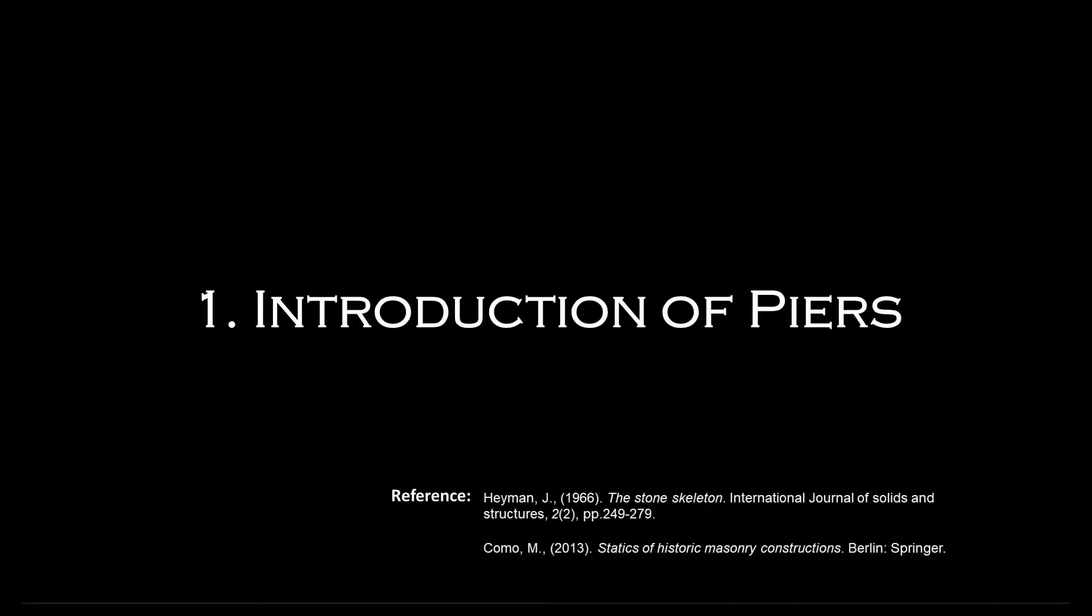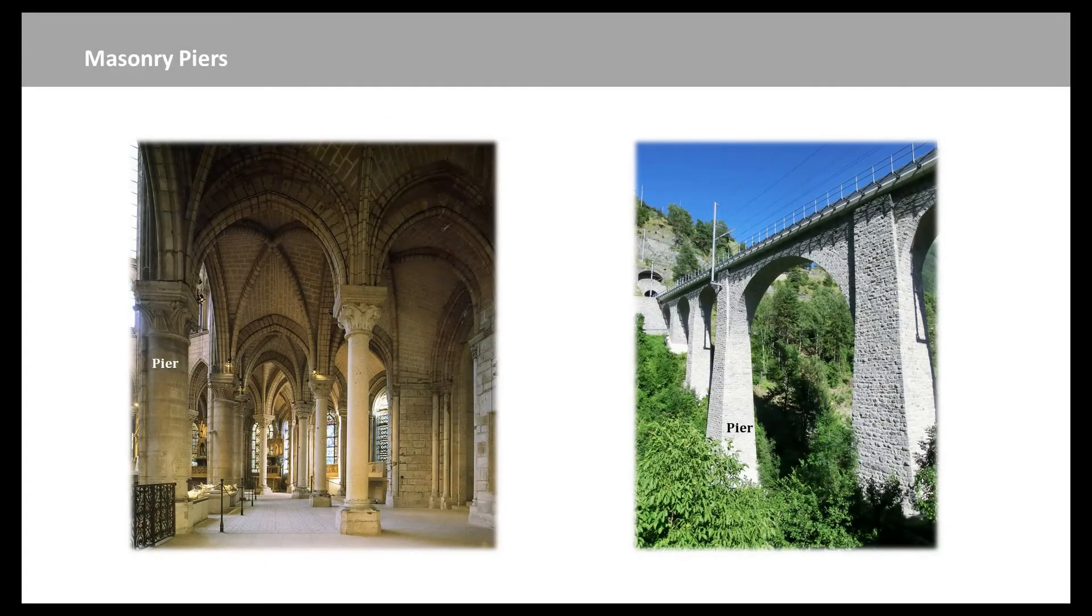Eccentrically loaded masonry piers behave very differently from reinforced concrete columns. In masonry piers, cracking spreads diffusely throughout wide areas of the structure, and the non-linear effects are much more severe. They strongly reduce the pier's strength. Even small eccentricities of the axial loads can produce serious reductions in strength.